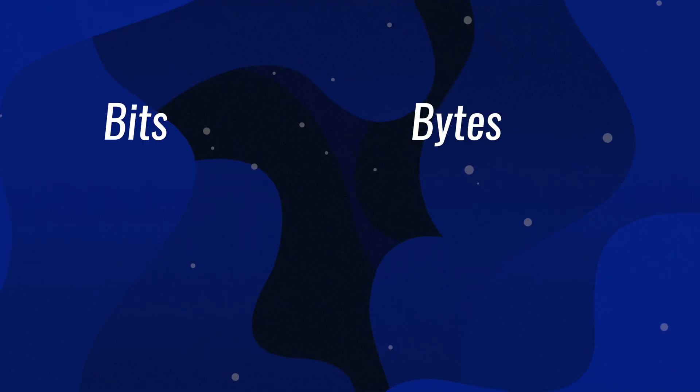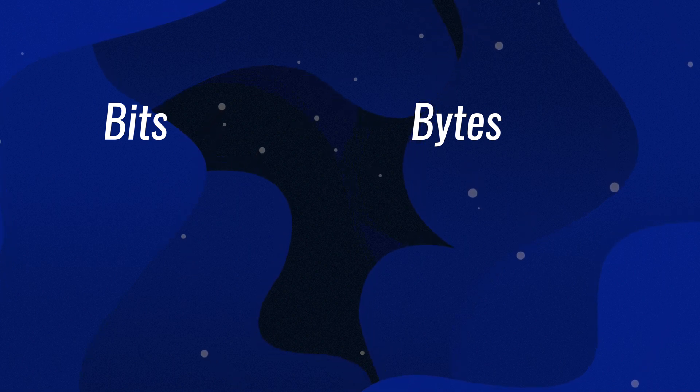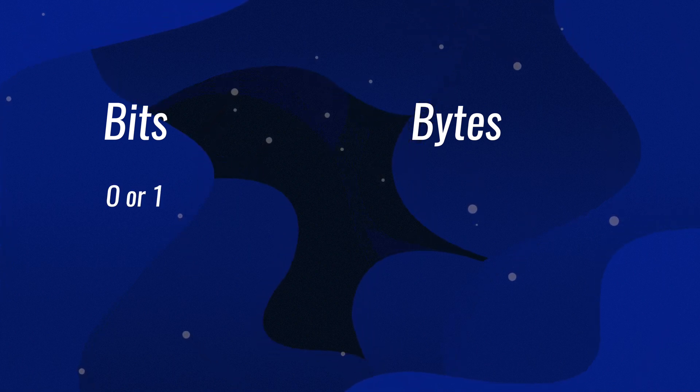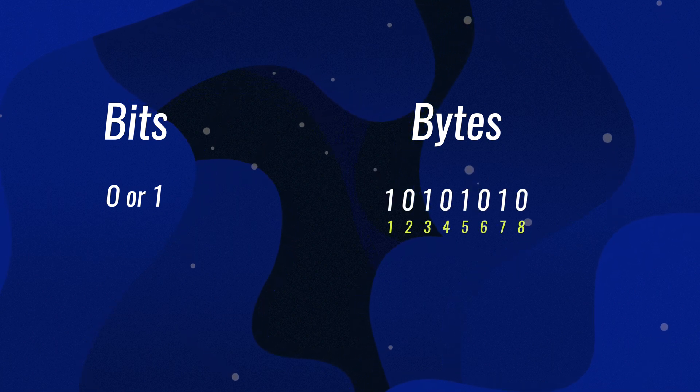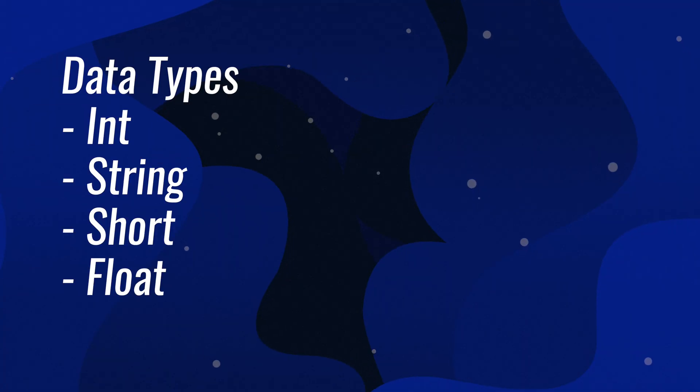To fully understand the integer overflow problem, we need to have a rough understanding of how a computer stores and processes information. The computer stores and processes information in bits and bytes. The bit is the smallest unit of information and can hold one of two values, either a zero or a one. The byte is simply a collection of eight bits. In some programming languages, when we want to store data, we have to tell the computer the size of the data we want to store. We do this indirectly by using data types.